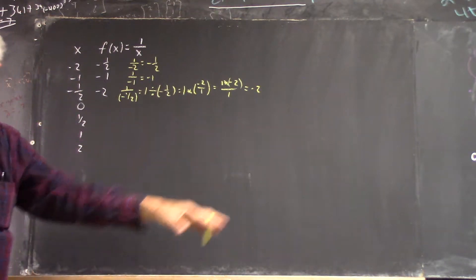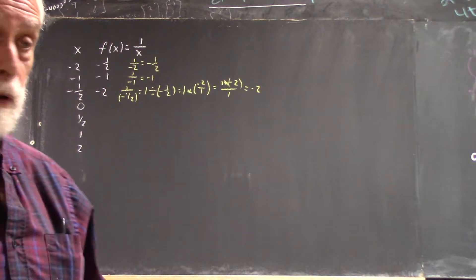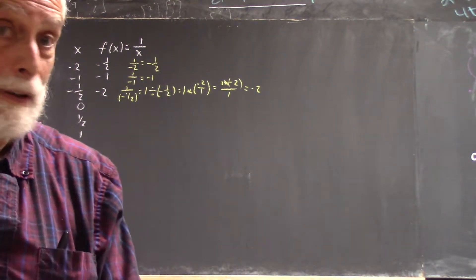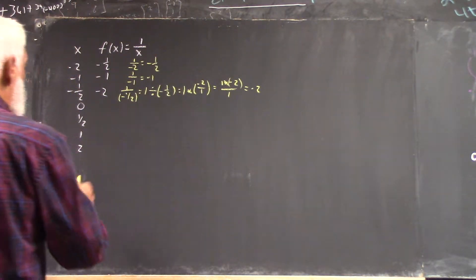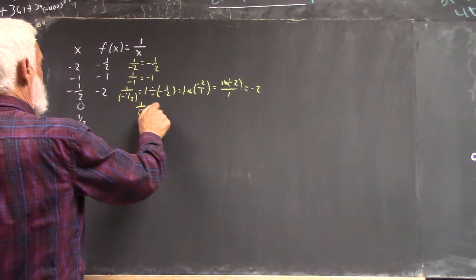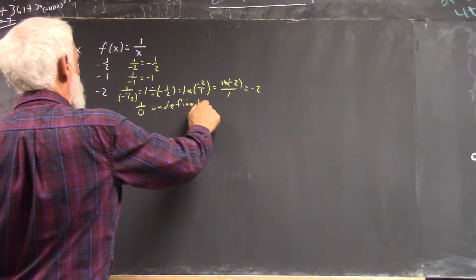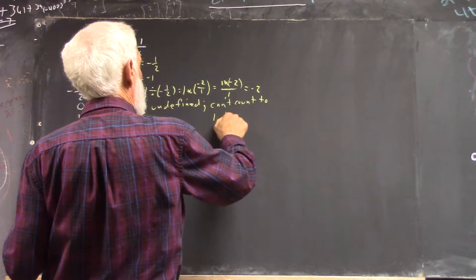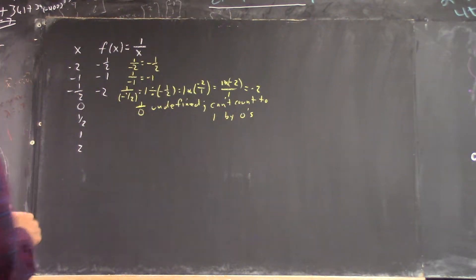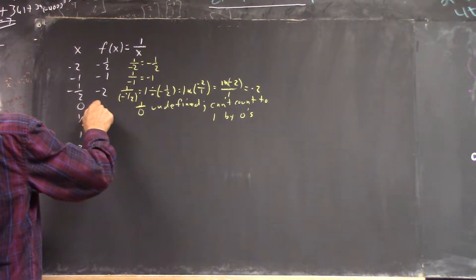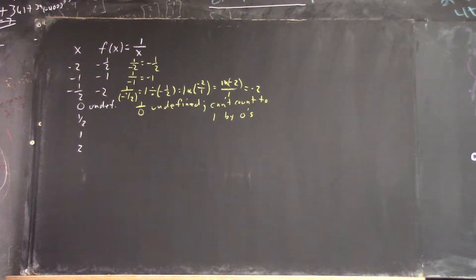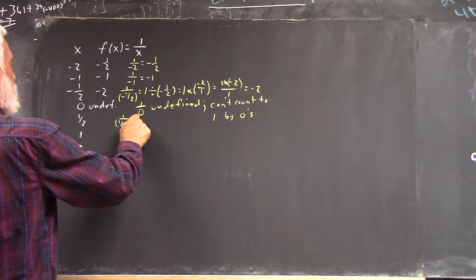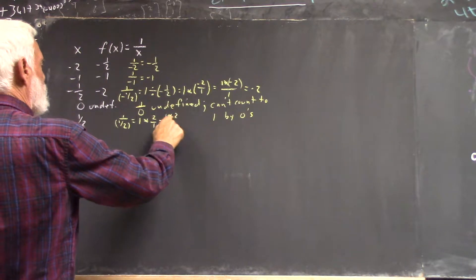A lot of people got stuck on this. A lot of people didn't do that. But if you write out what the law for inverse or a negative exponent is and write it out carefully, you can get there, and then you start getting used to these laws. 1 over 0 is undefined. You can't count to 1 by 0, so I'm going to write down here undefined. 1 divided by 1 half equals 1 times 2 over 1, which is 2.